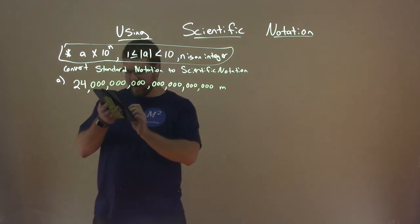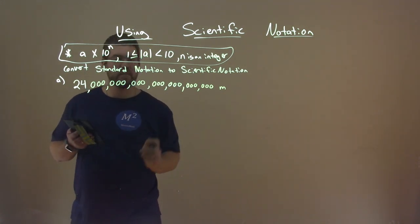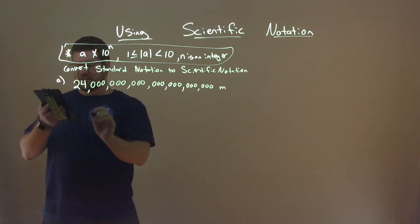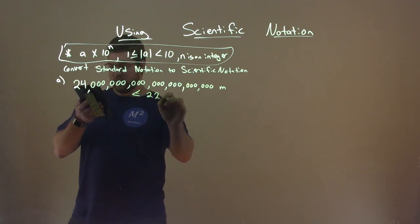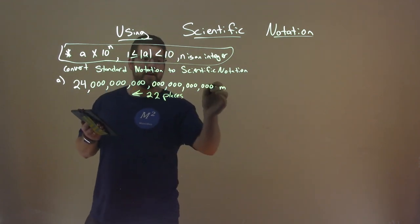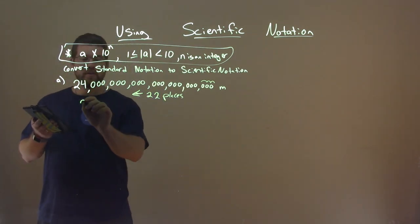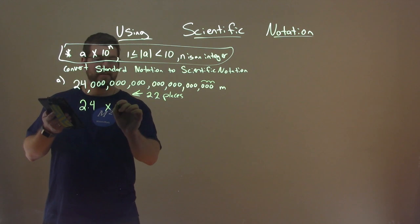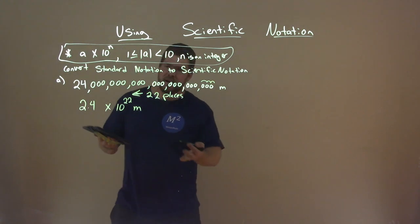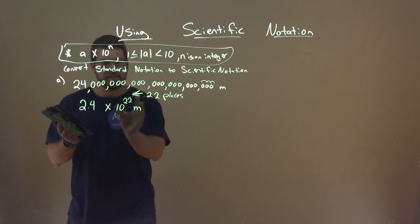So we have 22 places from that decimal point. We are really bringing it over 22 times to get there. So, this is 2.4 times 10 to the 22nd power meters. And obviously you can see the benefits here — especially when it's larger numbers, you can really break it down much smaller.